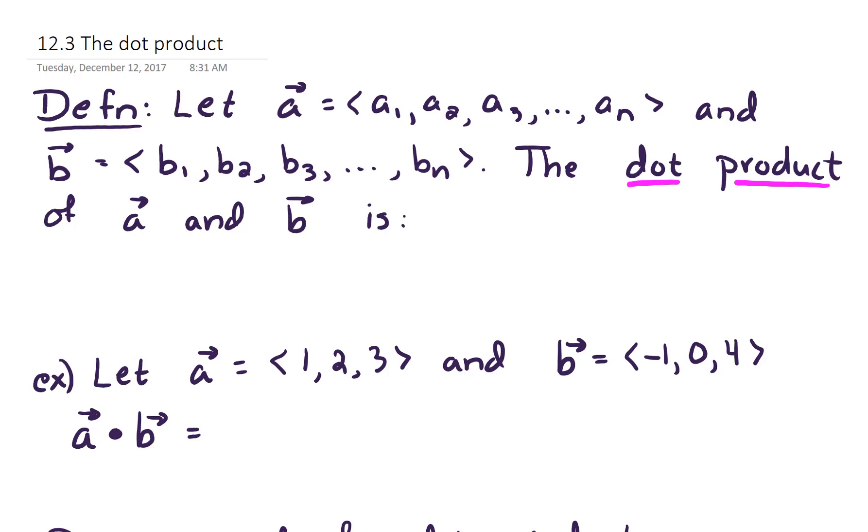Then the dot product of a and b is defined as a dot b. And when you do a dot product, you want to make sure that dot is big and bold so that it's not confused with any other piece of notation. So it's a dot b, don't be shy, big bold dot.